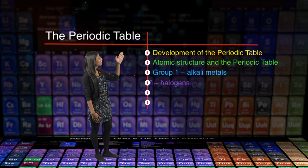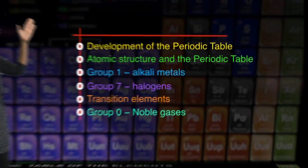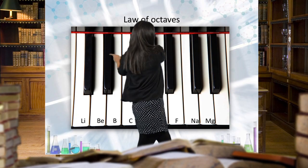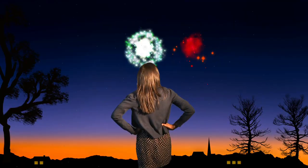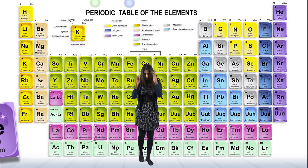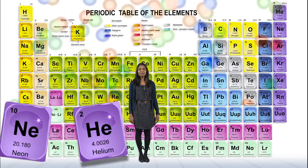At the beginning of the 19th century there were only about 30 elements known. Many compounds of transition metals also burn with a coloured flame. The elements in group zero are the six noble gases. Helium. Neon.